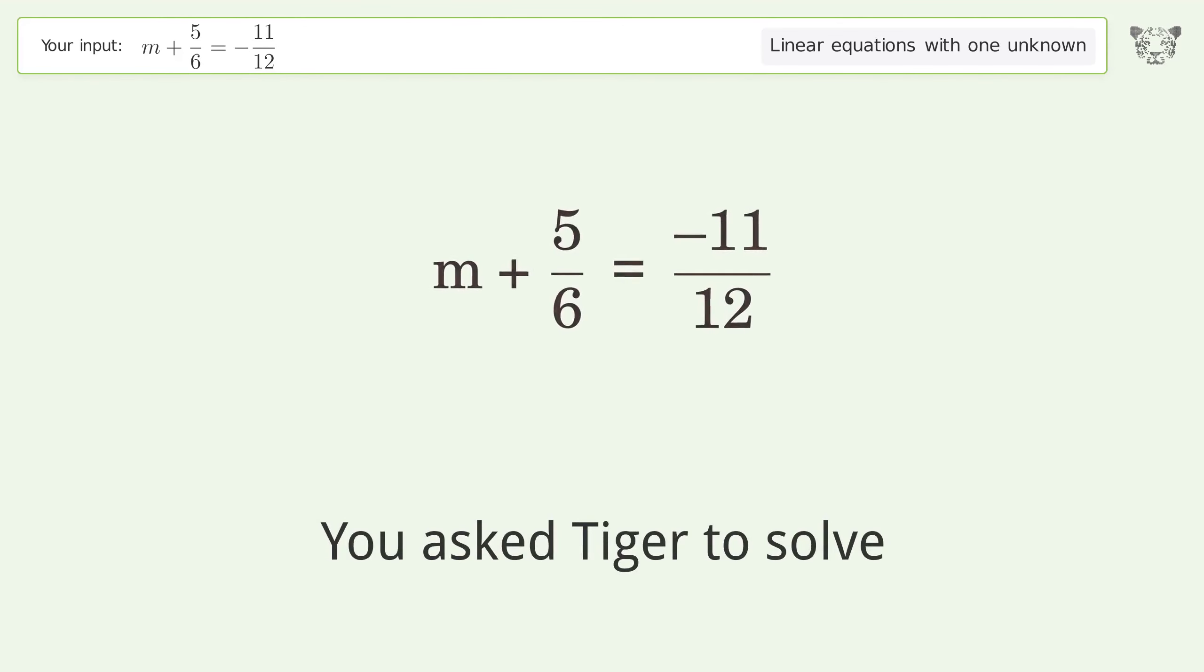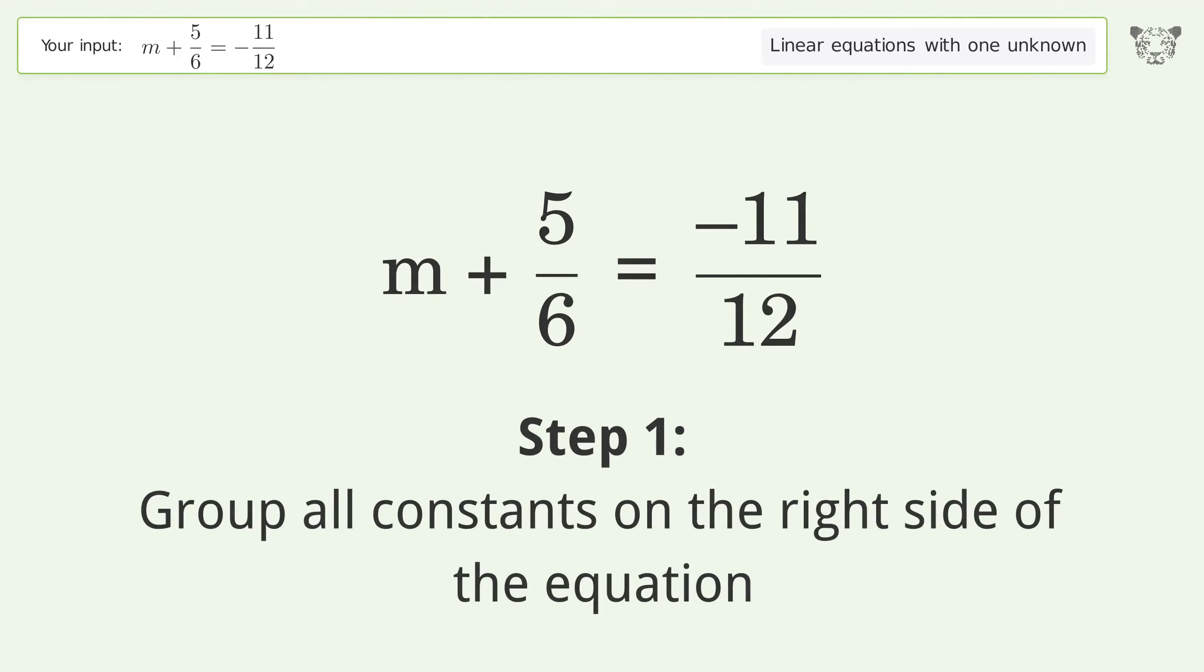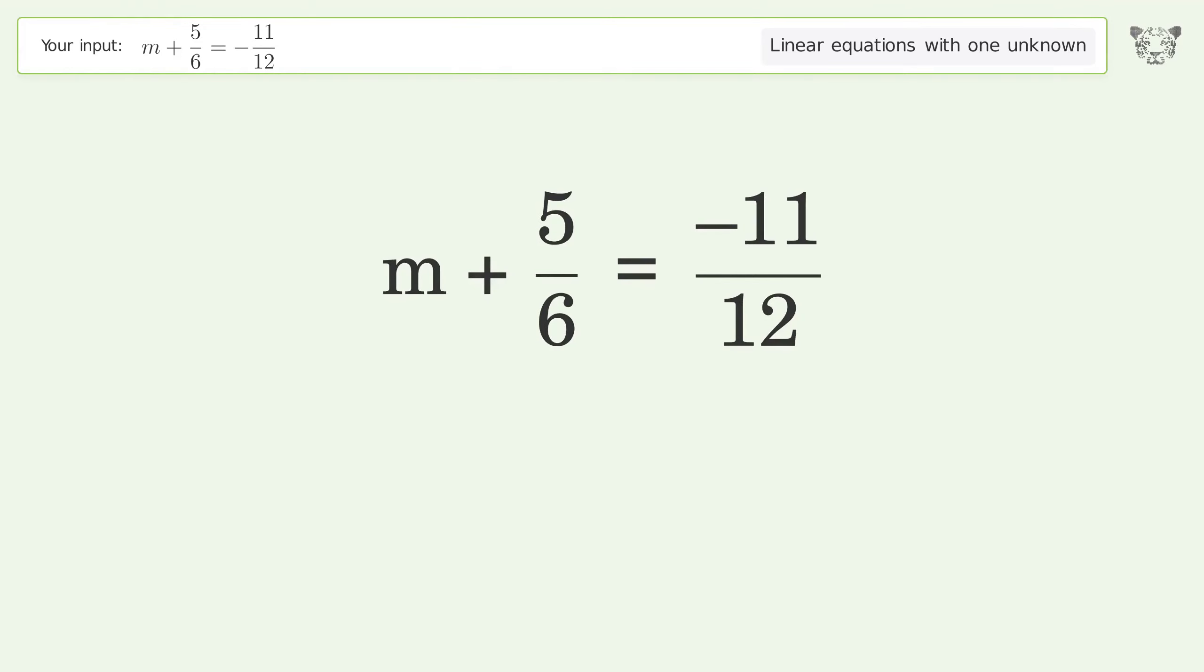You asked Tiger to solve this linear equation with one unknown. The final result is m equals negative 7 over 4. Let's solve it step by step. Group all constants on the right side of the equation and subtract 5 over 6 from both sides.